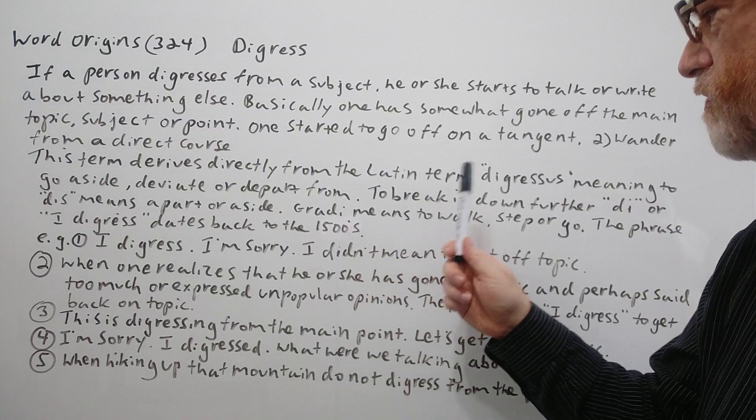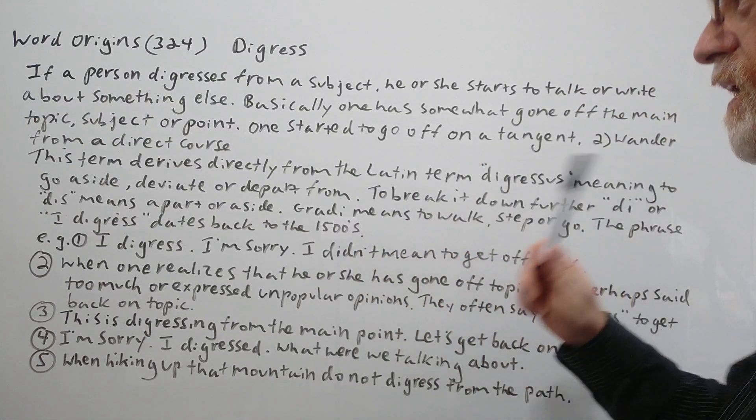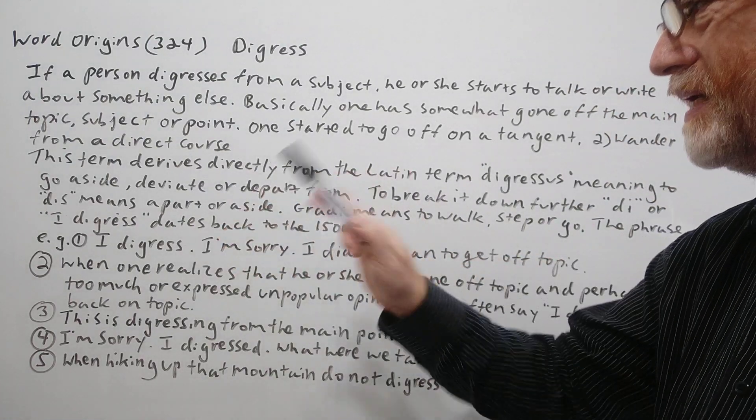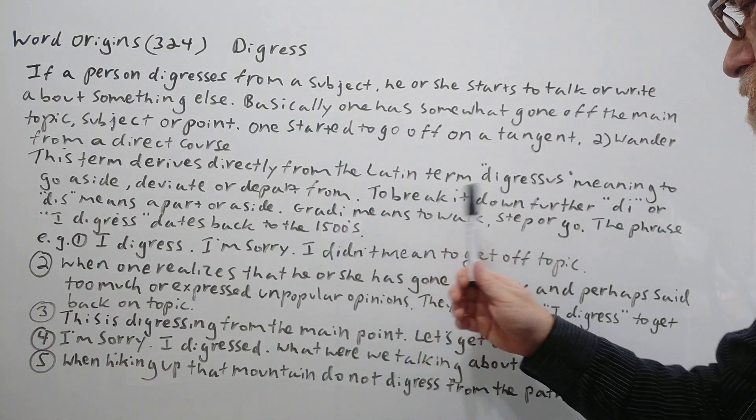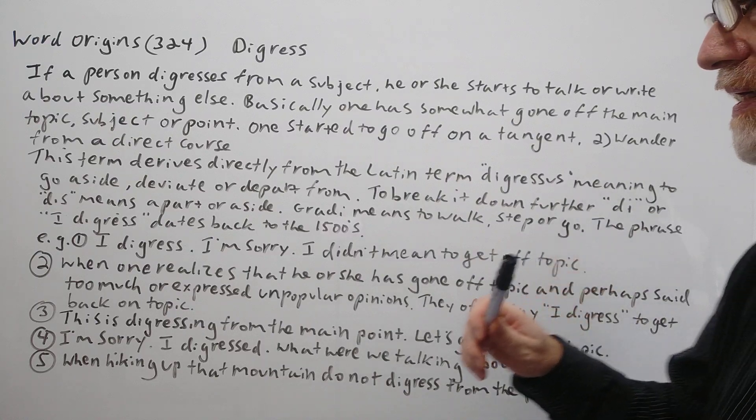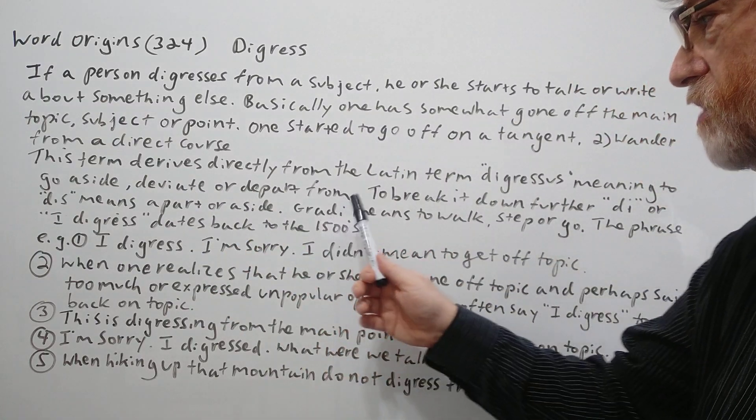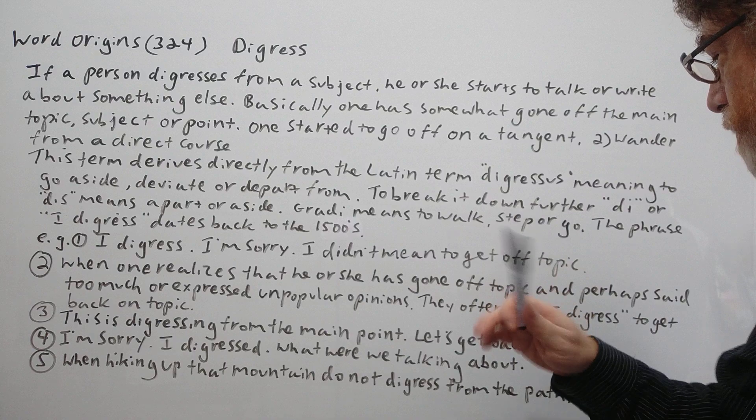The term derives directly from the Latin term digressus, meaning to go aside or deviate or depart from, which makes perfect sense. To break it down further, D or dis means apart or aside from. The gradi means to walk, step, or go.